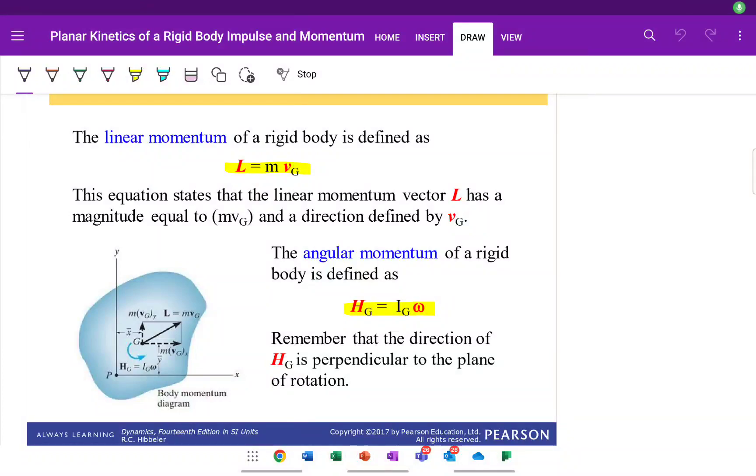This video is looking at planar kinetics of a rigid body, focusing on impulse and momentum. From the particle topic, you should remember that linear momentum is a body's mass times its velocity, so the top equation on the screen as you see it now.